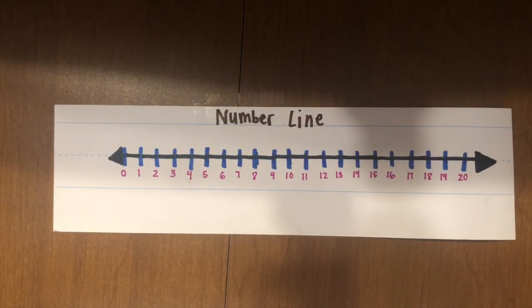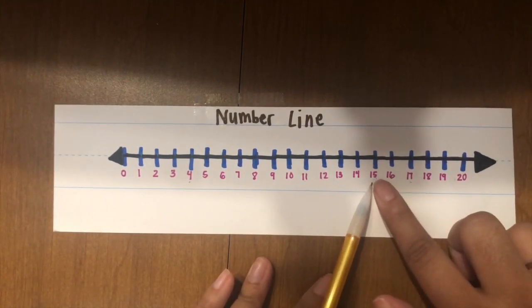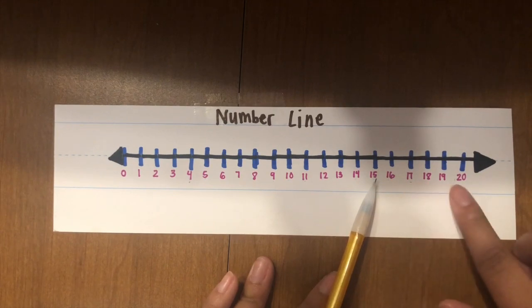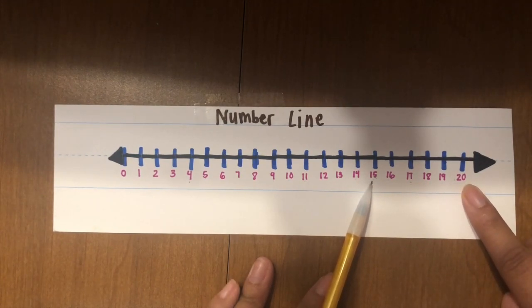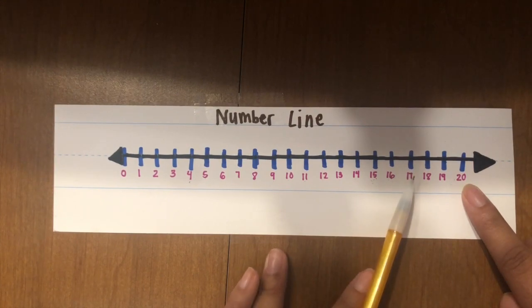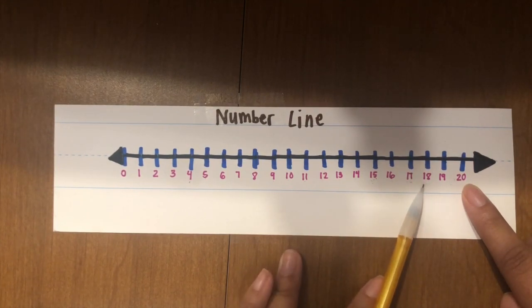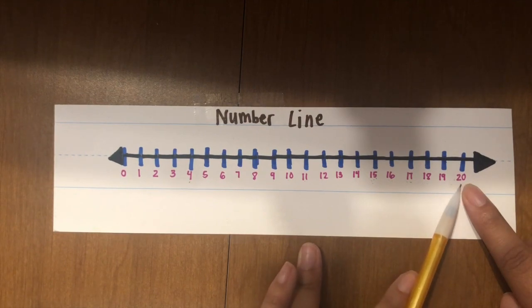Let's pick another number. This time let's start on the number fifteen. Ready? We're gonna start at fifteen and count all the way to twenty. Ready? Fifteen, sixteen, seventeen, eighteen, nineteen, twenty.